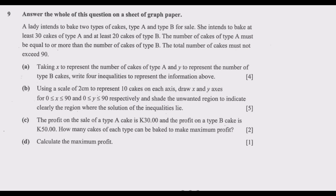Question 9 says: answer all of this question on a sheet of graph paper. A lady intends to bake two types of cakes, type A and type B, for sale. She intends to bake at least 30 cakes of type A and at least 20 cakes of type B. The number of cakes of type A must be equal to or more than the number of cakes of type B. The total number of cakes must not exceed 90. Question A: taking X to represent the number of cakes of type A and Y to represent the number of cakes of type B, write four inequalities to represent the information above.